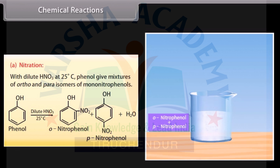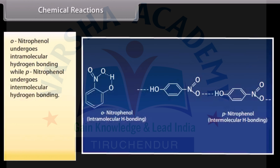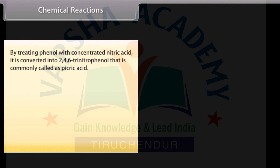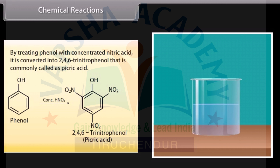On adding dilute nitric acid into phenol at 25 degrees Celsius, it forms ortho-nitrophenol and para-nitrophenol. Ortho-nitrophenol undergoes intramolecular hydrogen bonding while para-nitrophenol undergoes intermolecular hydrogen bonding. Ortho-nitrophenol is steam volatile whereas para-nitrophenol is less volatile due to the association of molecules, and so can be separated by distillation. By treating phenol with concentrated nitric acid, it is converted into 2,4,6-trinitrophenol, commonly called picric acid.